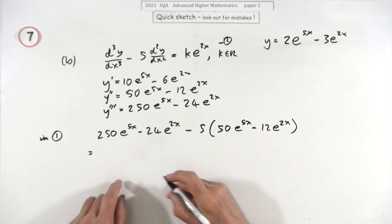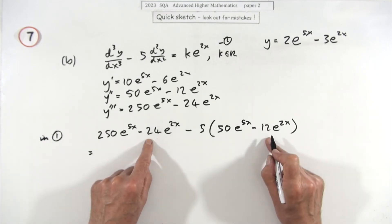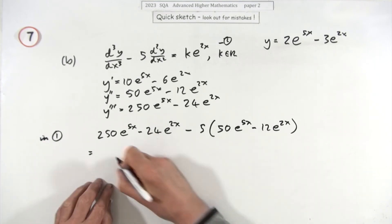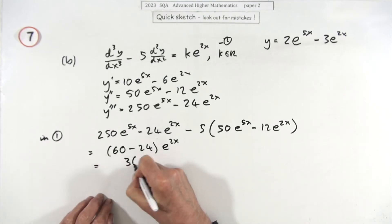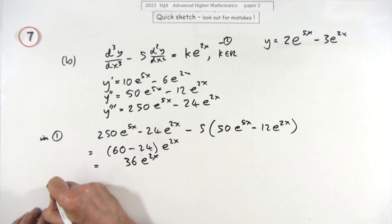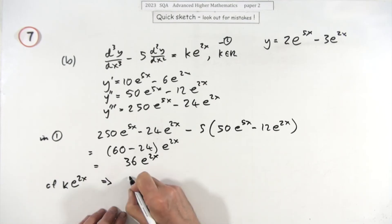So 250 take away 250, they go, so I've just got them left: a minus 24 and a plus 60. So there's 60 minus 24 lots of e to the 2x. That's what this lot comes to, which is 36. Which, if you were to compare it with what you're meant to get, comparing it with k e to the 2x, that means that k is equal to 36. There it is.